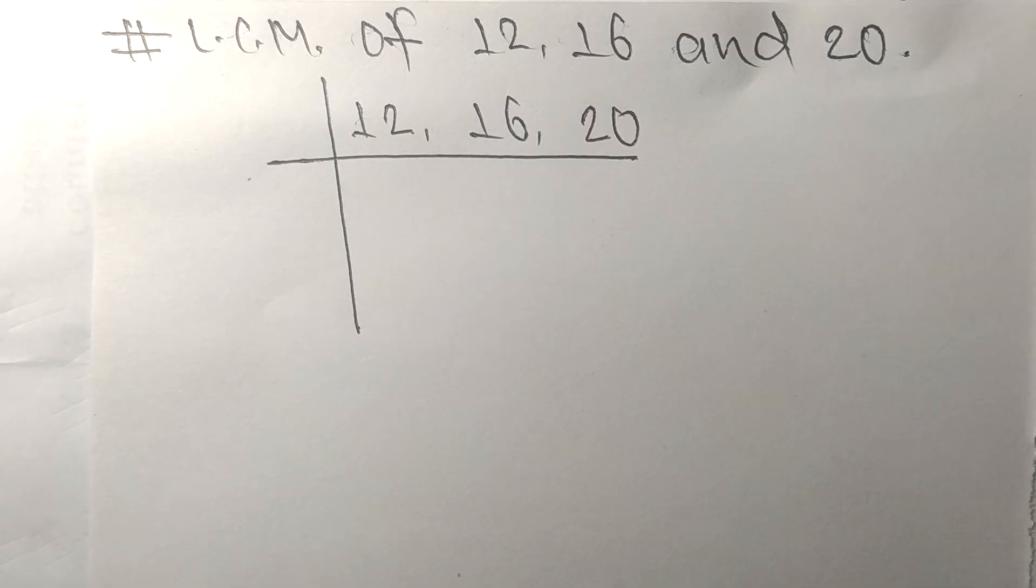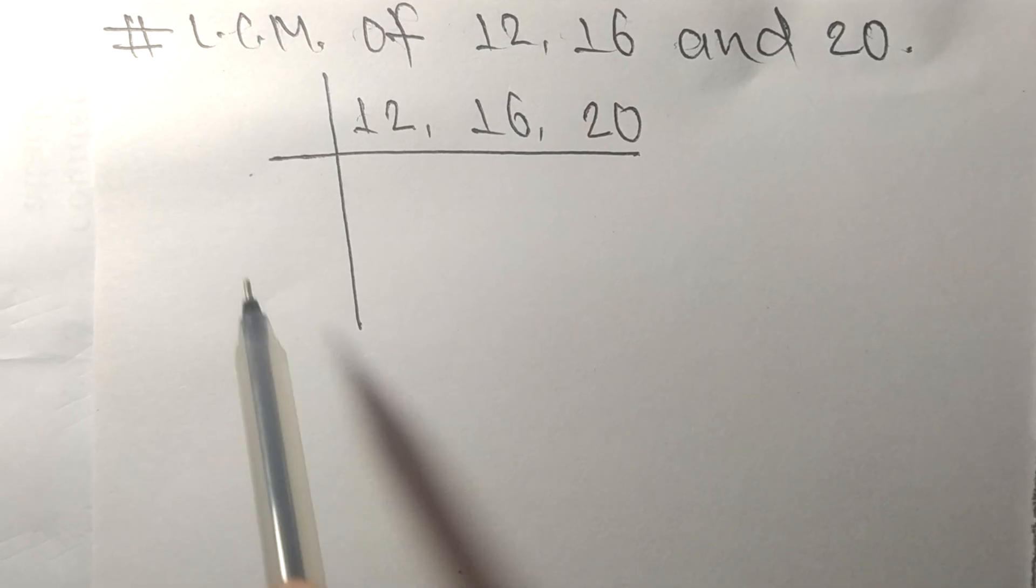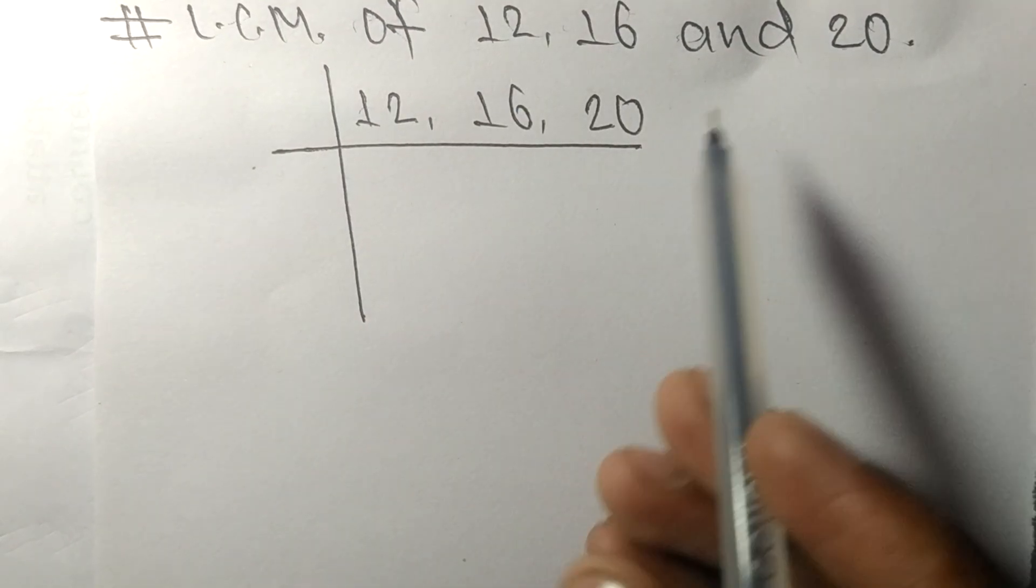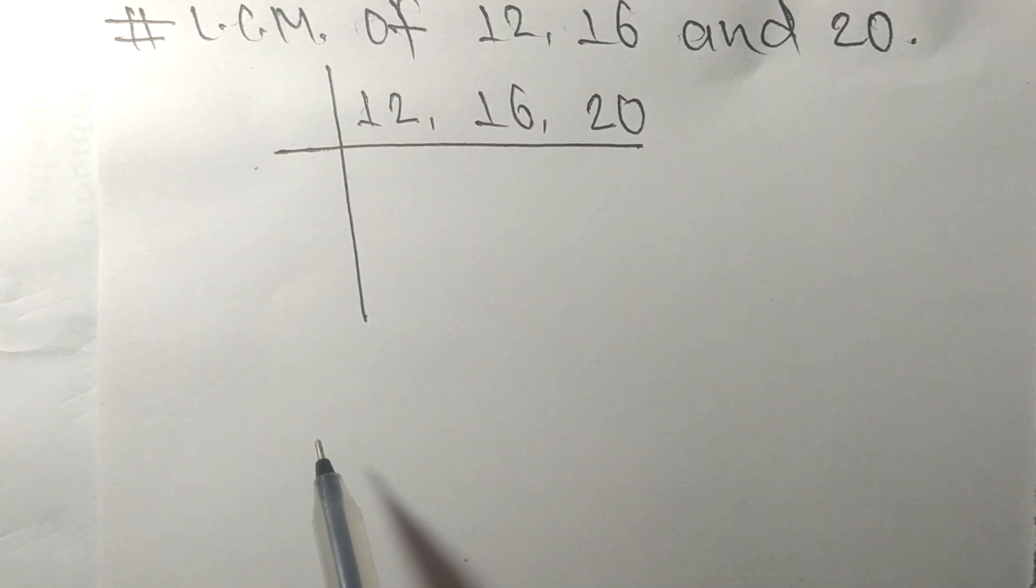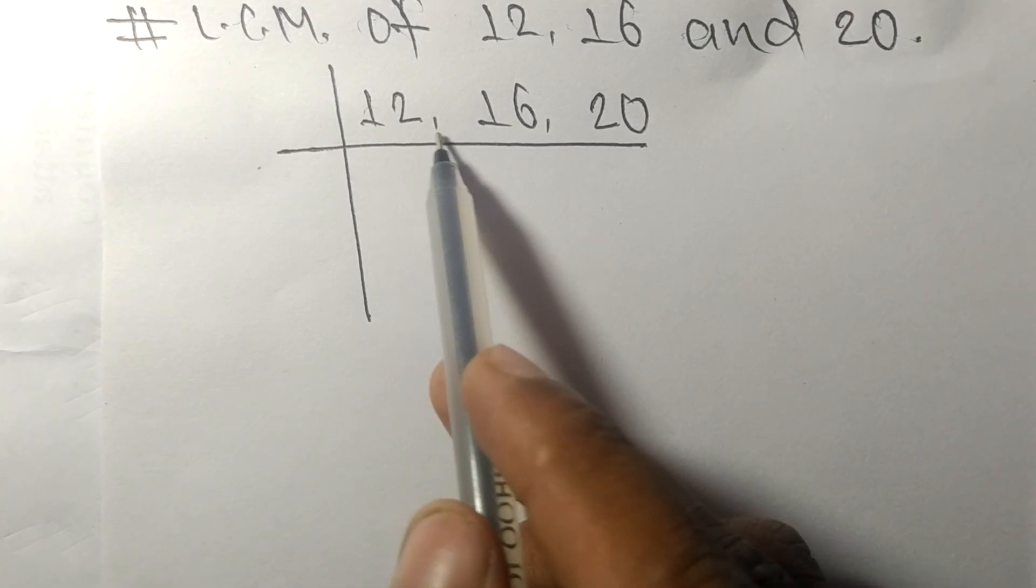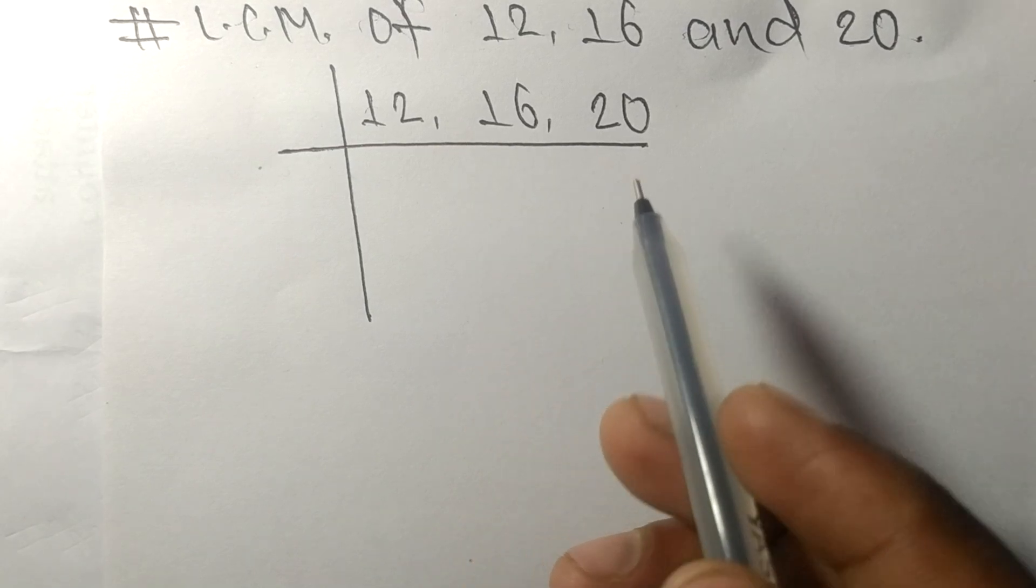Today in this video we shall learn to find the LCM of 12, 16 and 20. To find LCM, we have to choose the lowest number that can exactly divide at least any two of these numbers.